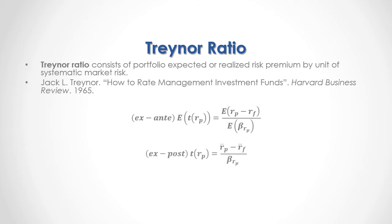Then we have the ex-post or realized portfolio return Treynor Ratio, equal to: in the numerator, the portfolio returns mean minus the risk-free rate of return mean, divided by the portfolio market beta. The portfolio market beta is equal to the covariance between portfolio returns and market returns, divided by the variance of the market returns.